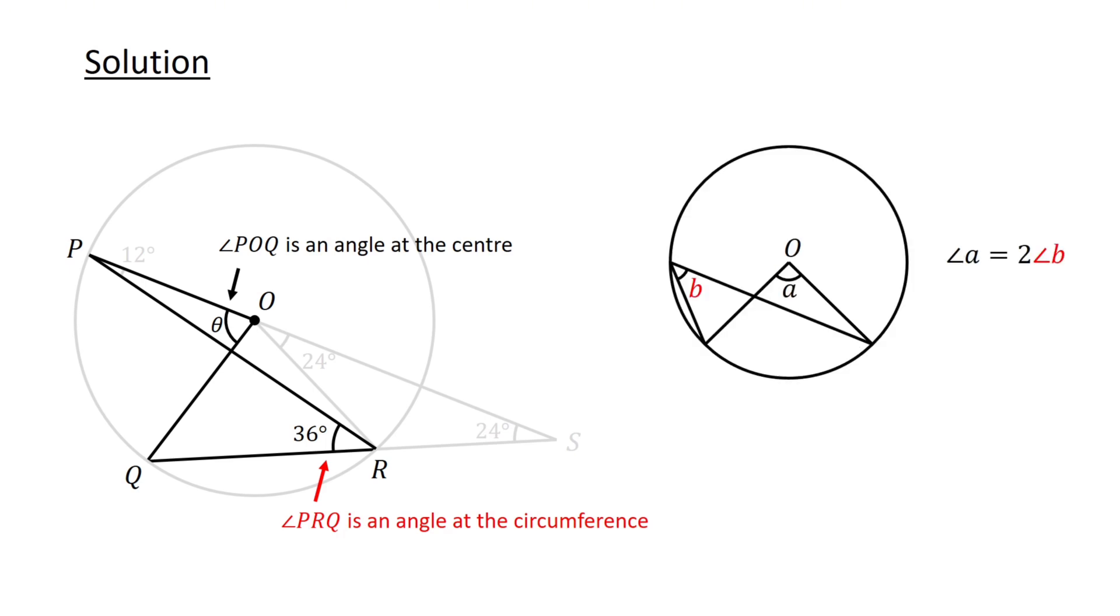Again, we use the property that an angle at the center is equal to twice the angle at the circumference. Thus theta, which is angle POQ, equals 2 times angle PRQ, which equals 2 times 36 degrees. Therefore, theta equals 72 degrees, which is a solution to our problem.